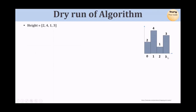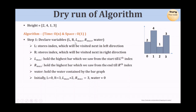Now let's do a dry run of our algorithm. This is the example we are going to consider, and this is the corresponding bar graph. This algorithm runs in O(n) time and O(1) space. We declare 5 variables: L stores the index to visit next from the left, R stores the index from the right, left max holds the highest bar from start to L, right max holds the highest bar from end to R, and water holds the total water. Initially L=0, R=last index (3), lmax=2, rmax=3, water=0.